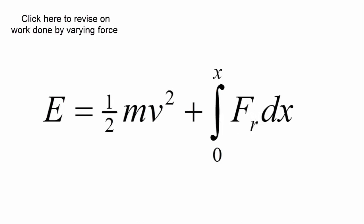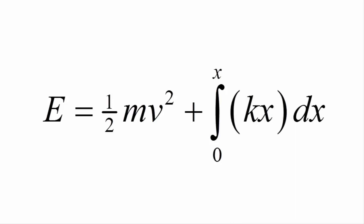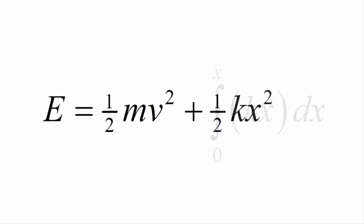If you have forgotten about work done by a varying force, refer back to the graphical analysis of work video. The potential energy gained by an oscillator is written as the integral of the restoring force with respect to its position relative to equilibrium. The restoring force is given by the product of a spring constant with a displacement. Solving for the integral gives the potential energy to be equal to half of the spring constant multiplied by the square of the displacement.